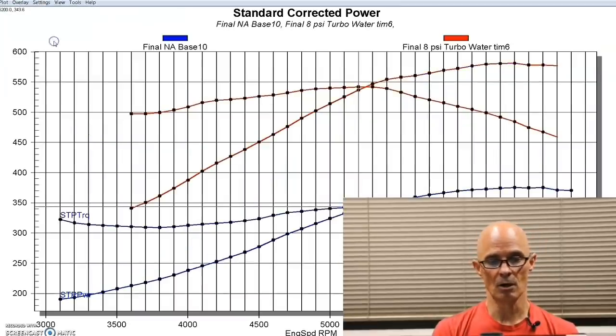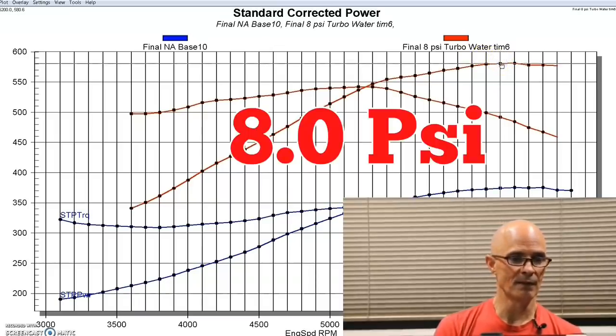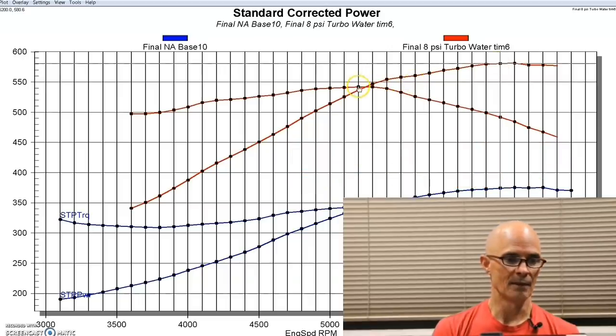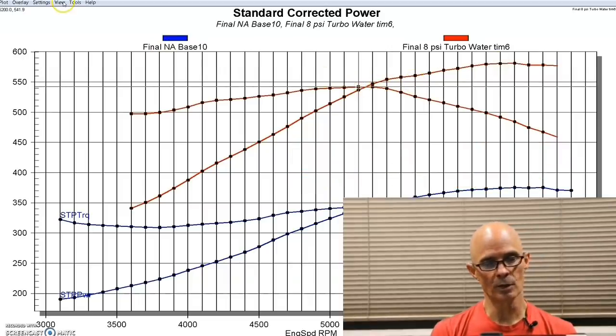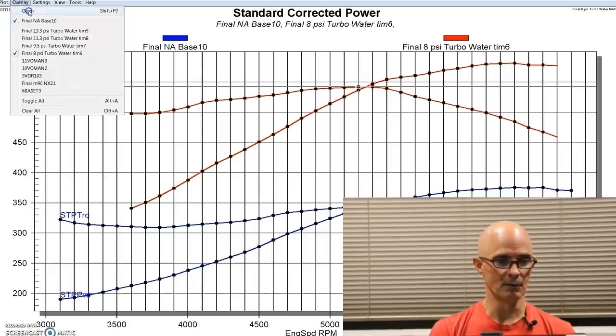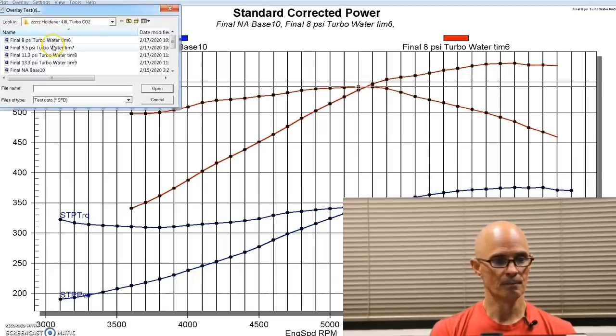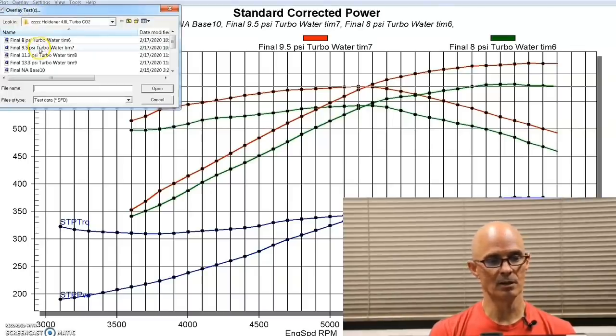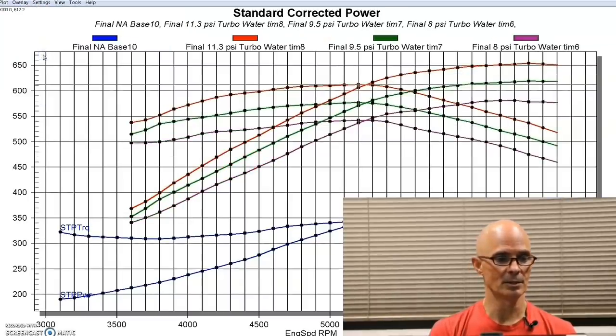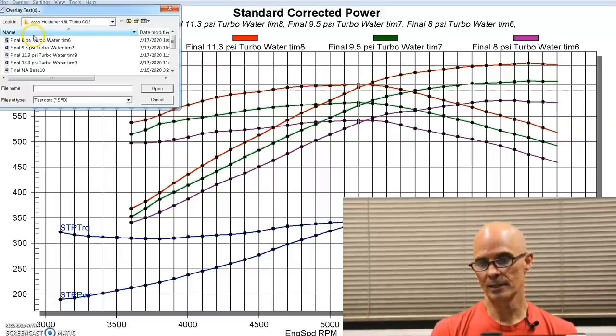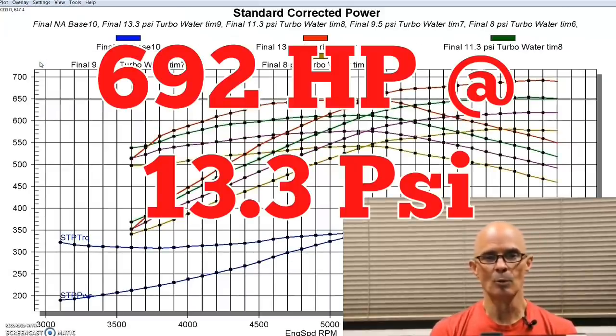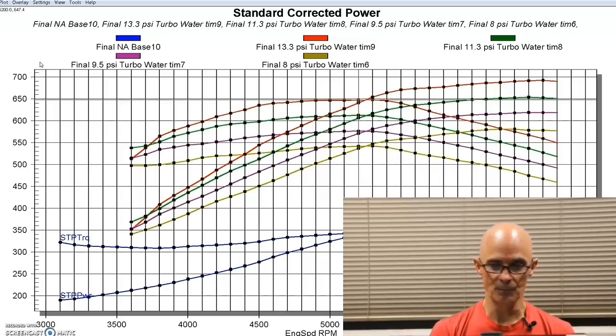So here was our first boost level, about eight pounds, made 581 horsepower and 542 foot-pounds of torque. And we ran it at a variety of different boost levels. Here's a little bit more boost. Here's a little bit more boost. That was nine and a half pounds. This was like 11 and a half pounds. This was 13.3 or so. So as you can see, it just goes up and up in power as we add more and more boost. Same typical thing, turbos always do that.